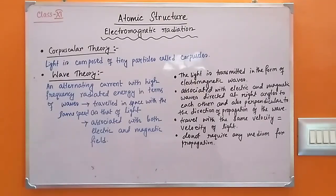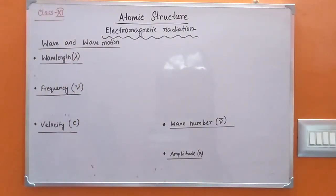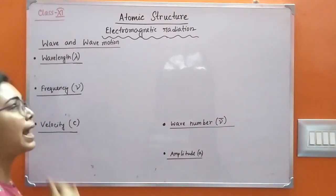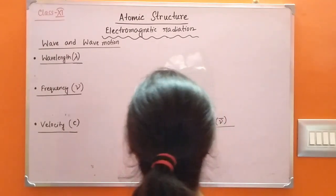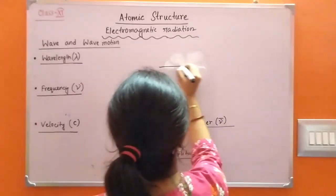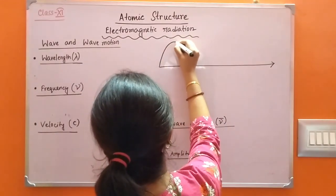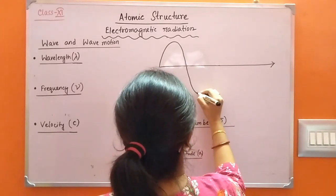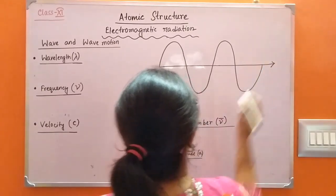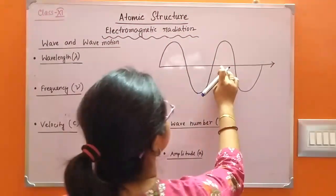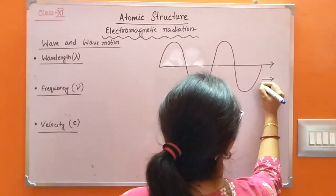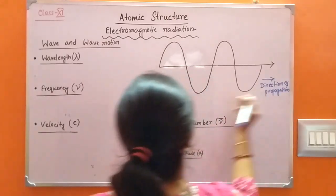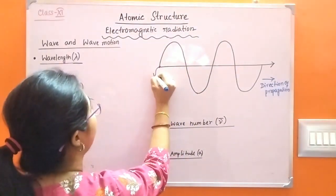Now, we will discuss about wave and wave motion. What is a wave? A wave is a periodic disturbance in space, and wave motion is the propagation of this periodic disturbance which carries energy. In a figure, I am showing wave motion. This is the line of propagation, and this is the direction of propagation of the wave motion. The wave originates from a point of disturbance.